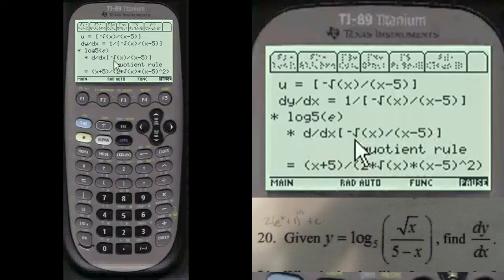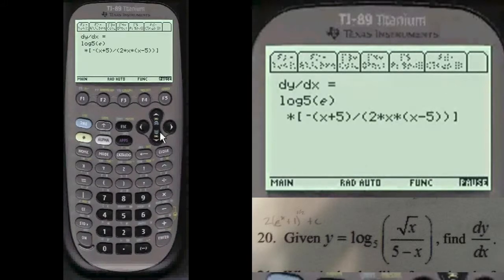Now this part here, derivative of this section here is a quotient rule. And that equals this right here. You mark that down on your paper. And here's the answer, log of 5e times this part here.